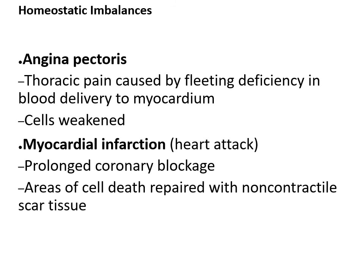A homeostatic imbalance associated with fleeting blood flow to the myocardium: angina pectoris is the term for thoracic pain caused by slow delivery of blood to the myocardium — the cells don't die here, they're weakened and oxygen starved, resulting in pain. Myocardial infarction refers to a complete blockage of circulation to the heart muscle — a prolonged coronary blockage is very dangerous because cells dependent on oxygen delivery can die, replaced by scar tissue, diminishing the pumping ability of the heart over time.